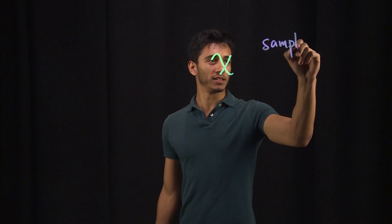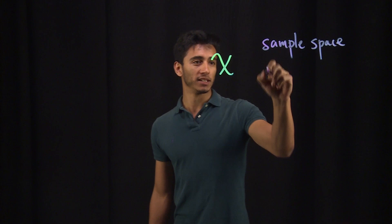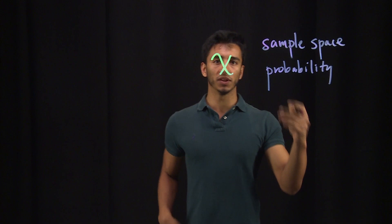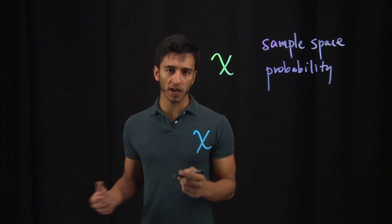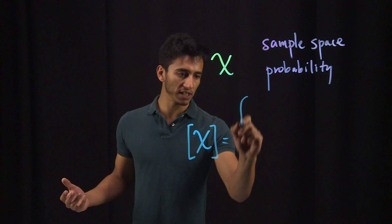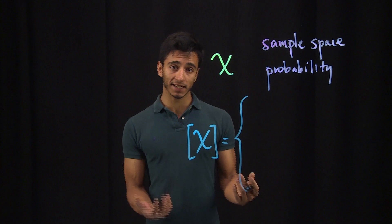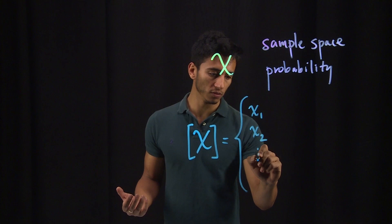So let's understand what these two things mean. Let's pretend we have a random variable X. Now the sample space is the set of values that X can take. So we say that would be X1, X2, all the way to Xn, assuming that we have n outcomes that might happen for X.